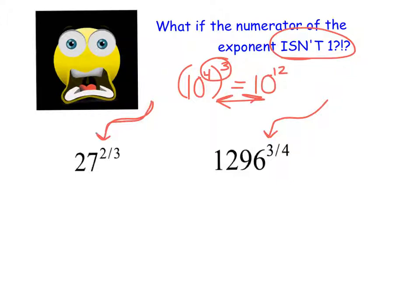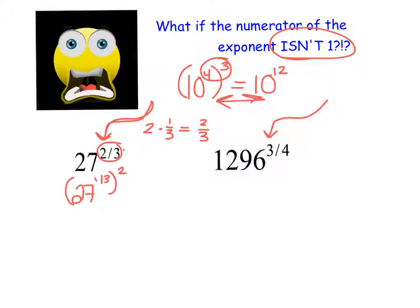So what we're going to do here is rewrite this very strategically. Hopefully you already know that 2 times 1 third is the same thing as 2 thirds. What we're going to do here is basically undo the powers-to-powers rule. We're going to rewrite this as 27 to the power of 1 third, all raised to the power of 2. Essentially, we're doing the powers-to-powers rule backwards, because we know that we would multiply 1 third times 2 and write it as 2 thirds.